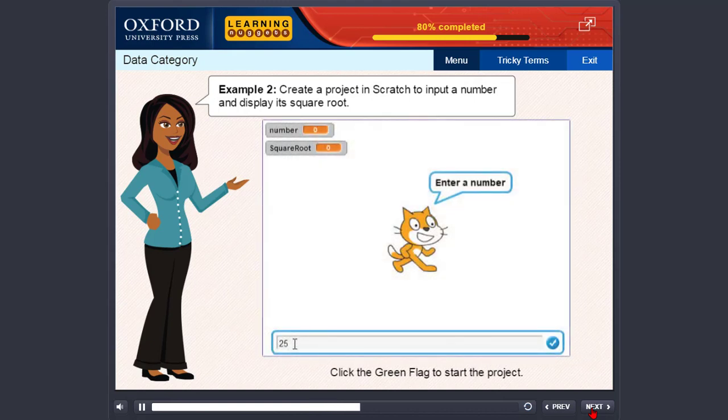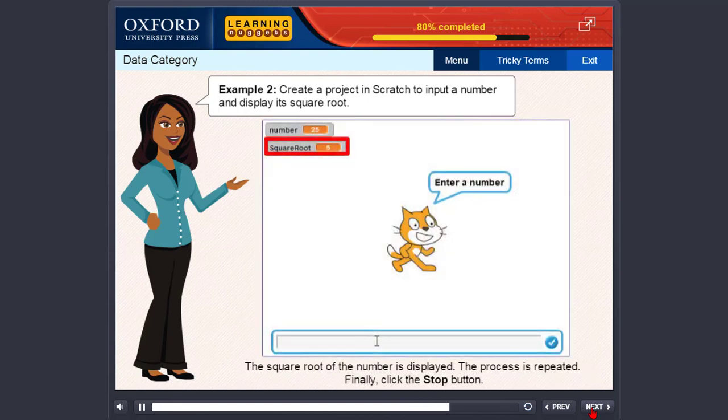The stage will look as shown in the figure. Enter the number in the text box and click the Enter key or the check mark. The square root of the number is displayed. The process is repeated. Finally, click the Stop button.